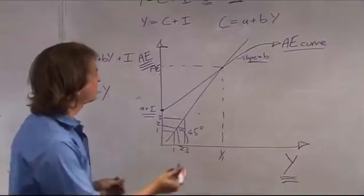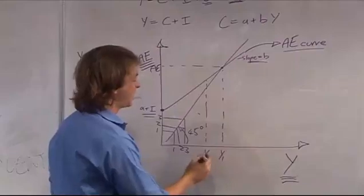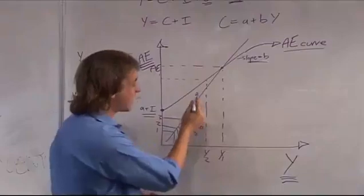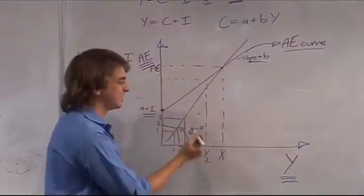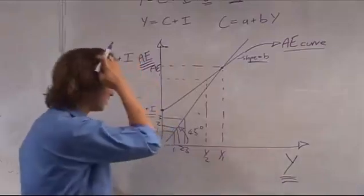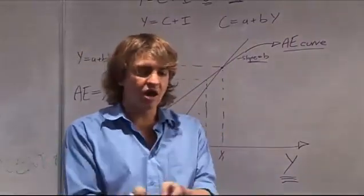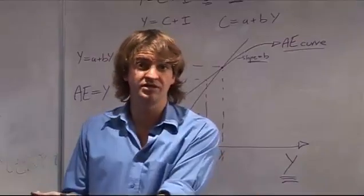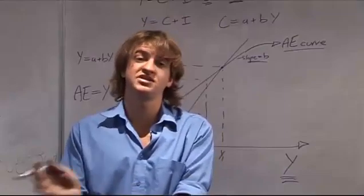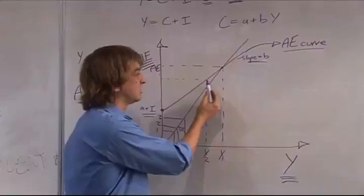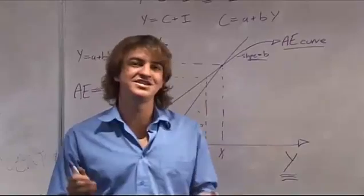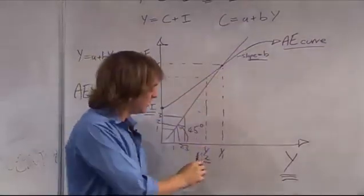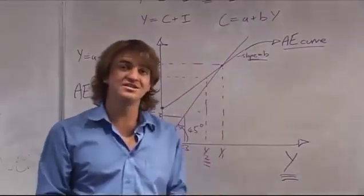What happens if we're at a point such as Y2, where you have less output than at equilibrium? The aggregate expenditure curve is higher than the 45-degree line, meaning aggregate expenditure is higher than the amount of output in the economy. You're spending more on goods than are being produced, so firms have to dip into their inventories to meet that demand. Whenever aggregate expenditure is greater than total production — when you're below equilibrium — you're going to have unintended inventory shortfall.